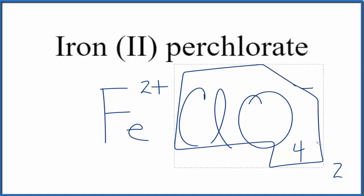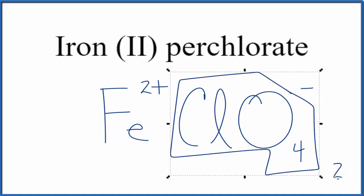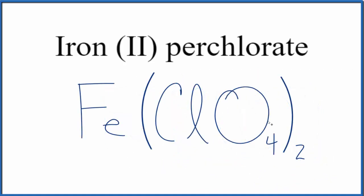We would need to replace this with parentheses since we have 2 perchlorate ions. Then get rid of these symbols here. And this is the formula for iron (II) perchlorate: Fe(ClO4)2.